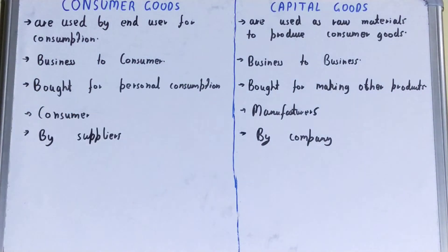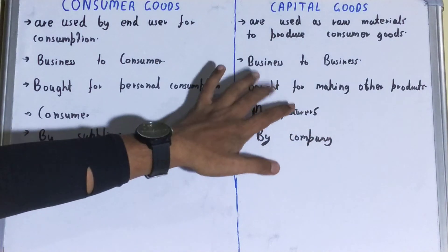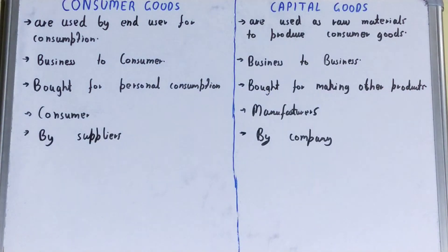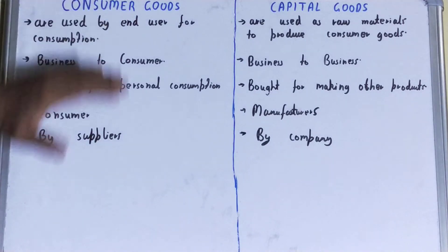Next, if we talk about the purpose, then in the case of consumer goods the purpose is bought for personal consumption — the end user buys for personal use. But in the case of capital goods, the purpose is buying for the manufacture of consumer goods.